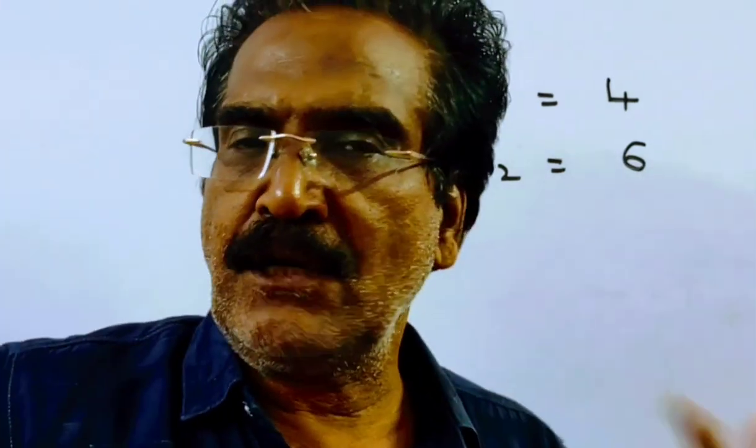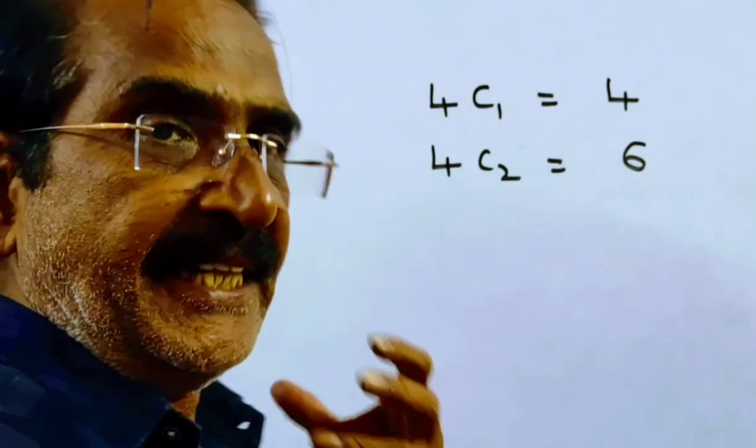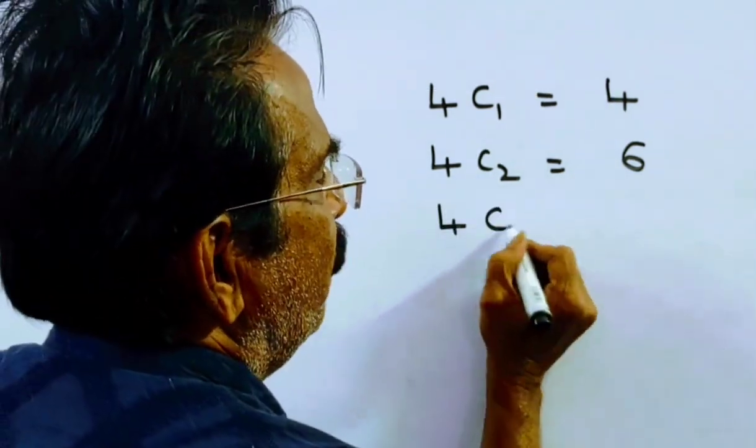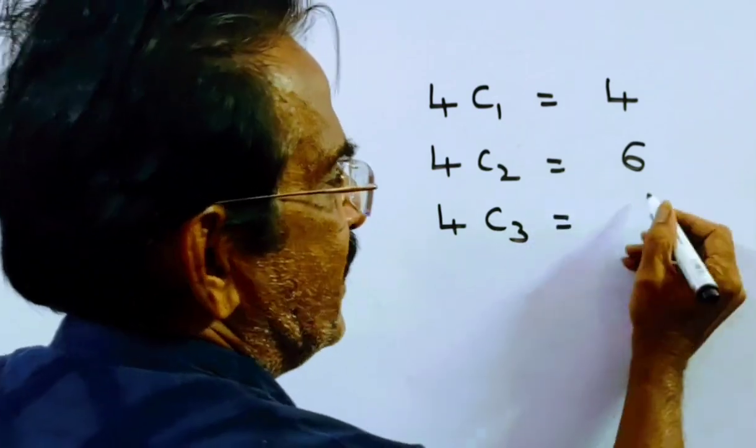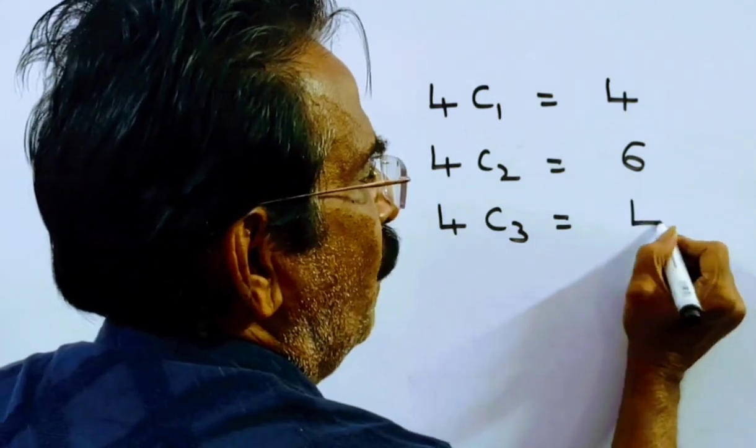If he takes three coins at a time, he can make 4C3 different sums. 4C3 is equal to 4C1, which is 4.